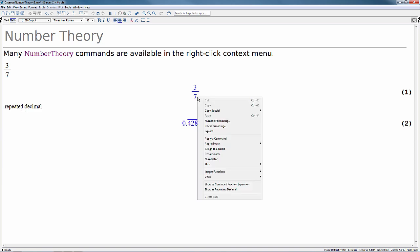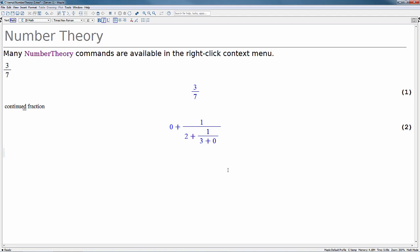We can also show this in a continued fraction expansion. We can do this by right-clicking, choosing show as continued fraction expansion, and we get the resulting display.